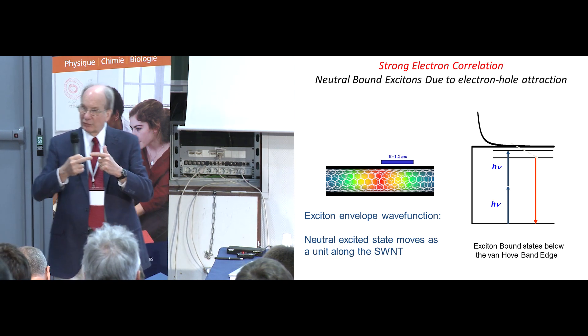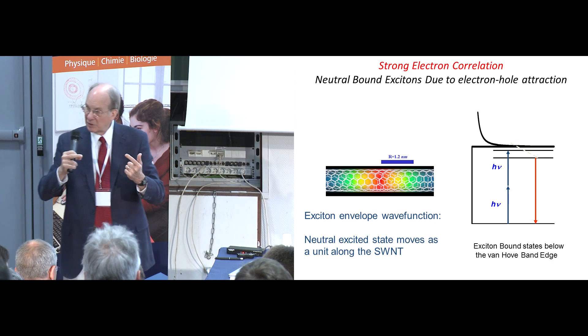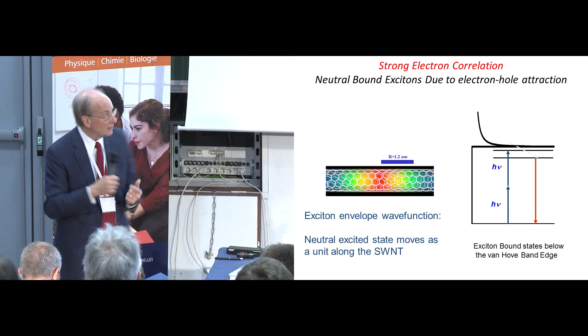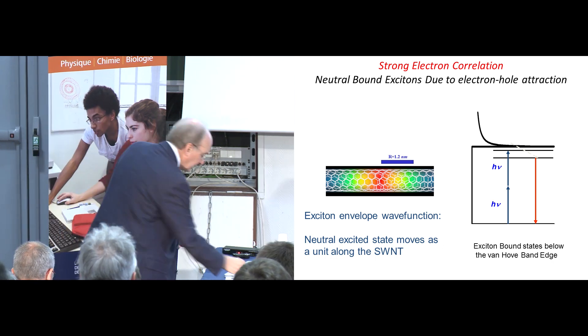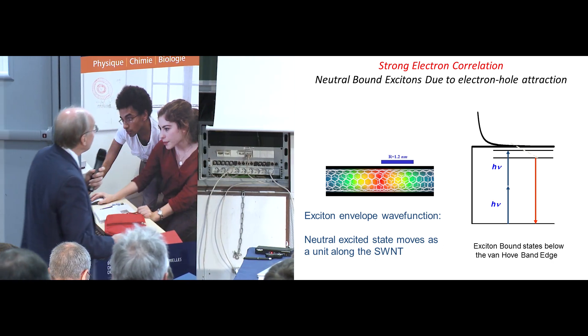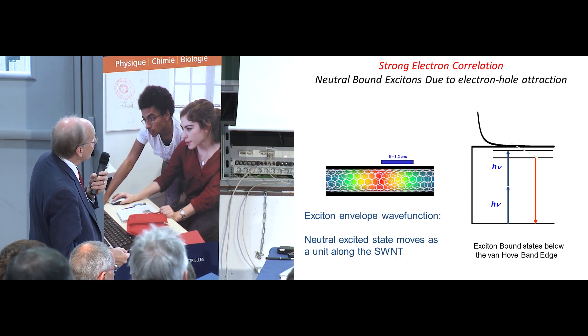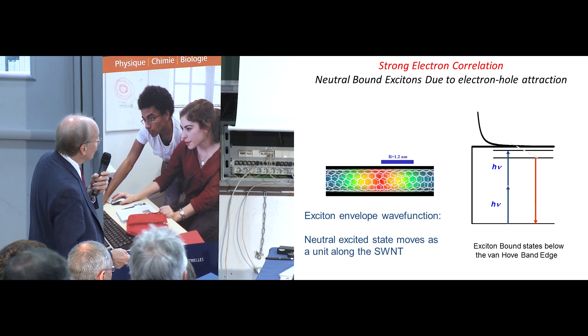So the screening, for example, is far less than it is in a three-dimensional semiconductor. Coulomb attraction is stronger. That means the bound state should exist. So you have this exciton that can exist below the dissociation limit where the free carriers move up and down the entire length of the tube.